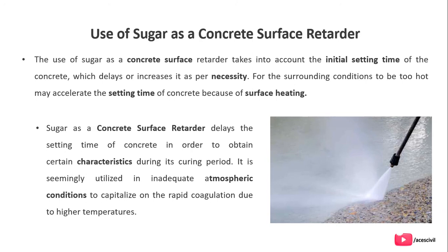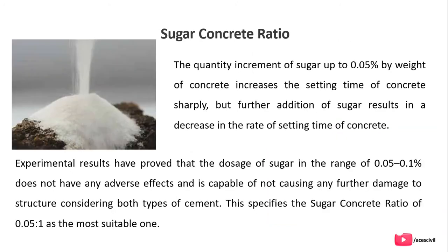Regarding the sugar-concrete ratio, a quantity increment of sugar up to 0.05% by weight of concrete increases the setting time of concrete sharply, but further addition of sugar results in a decrease in the rate of setting time. Experimental results have proven that doses of sugar in the range of 0.05 to 0.1% do not have an adverse effect and are capable of not causing any further damage to the structure, specifying that a sugar-concrete ratio of 0.05 is the most suitable one.